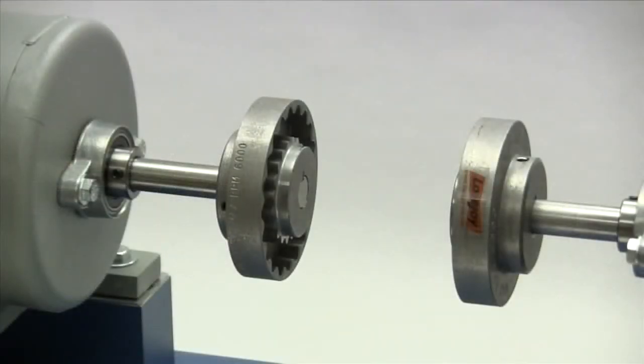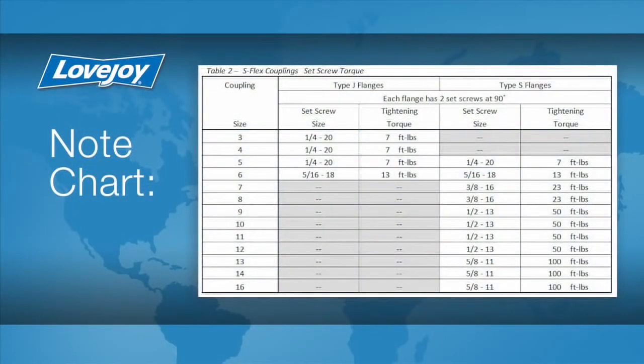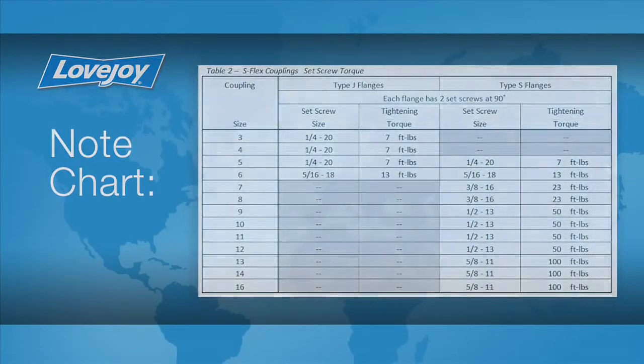Each S-Flex flange has two set screws and the set screws should be tightened with a calibrated torque wrench using the recommended torque settings found in the installation guide. The use of a torque wrench is important. If the set screws are not tightened properly, the flange could work loose and slide on the shaft. If the set screws are too tight, they could damage the key, shaft, or flange.